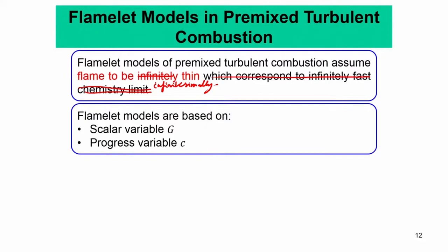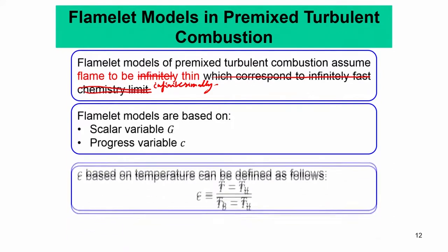We will consider two approaches: the G-equation model and the progress variable model. The scalar variable g and the progress variable c are the two models we will consider. The progress variable c is essentially a non-dimensional temperature difference: c equals (T minus T_u) divided by (T_b minus T_u). So c equals 0 when T equals T_u, and c equals 1 when T equals T_b — c varies between 0 and 1.